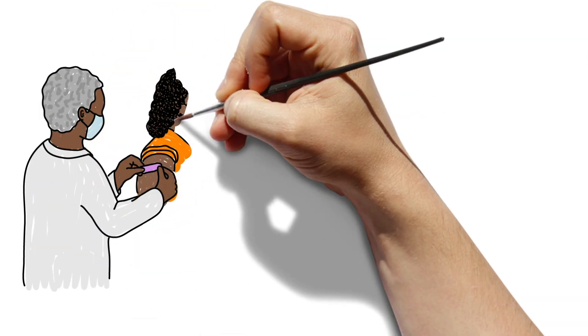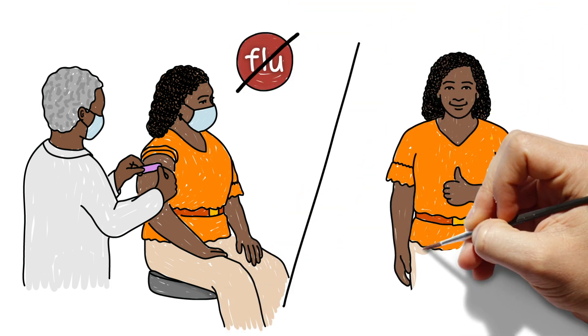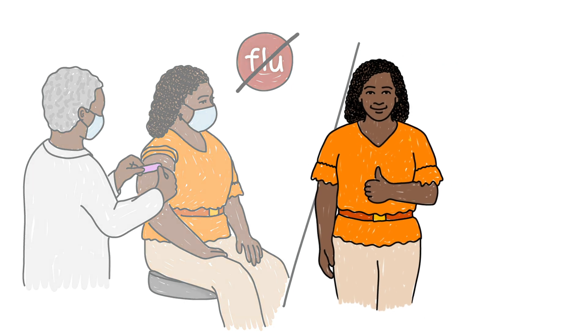Getting a flu vaccine can't give us the flu. The most common thing we can experience when we get a vaccine is a sore arm and that goes away fast.